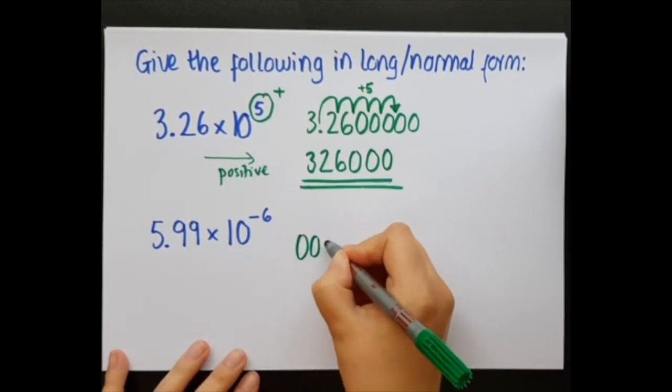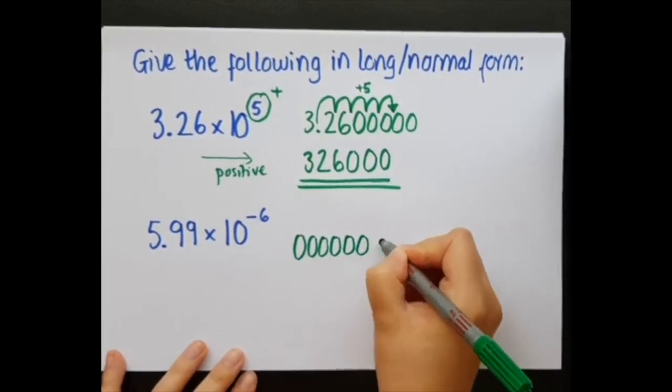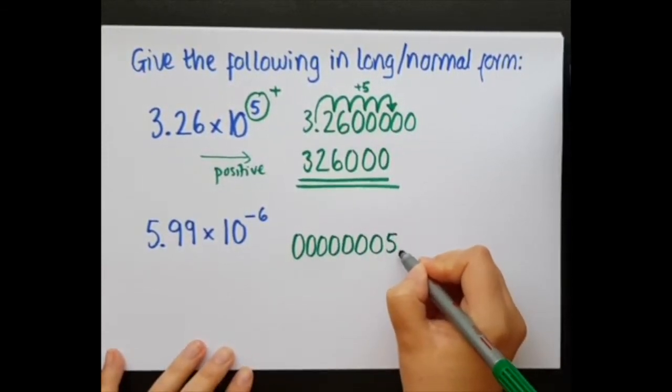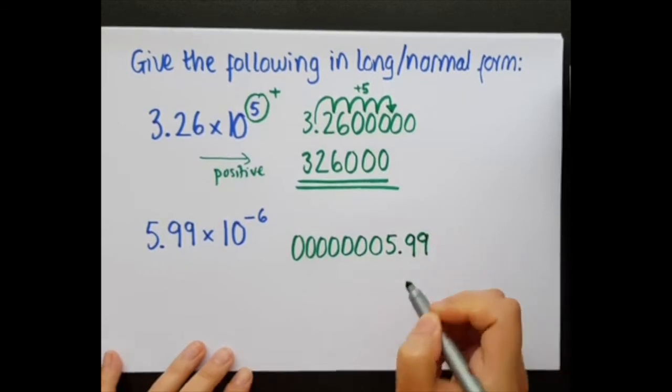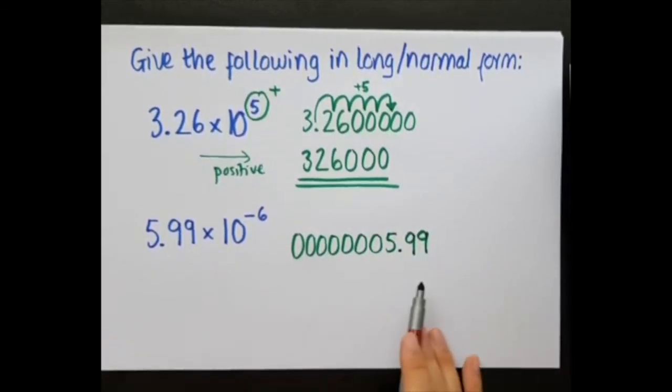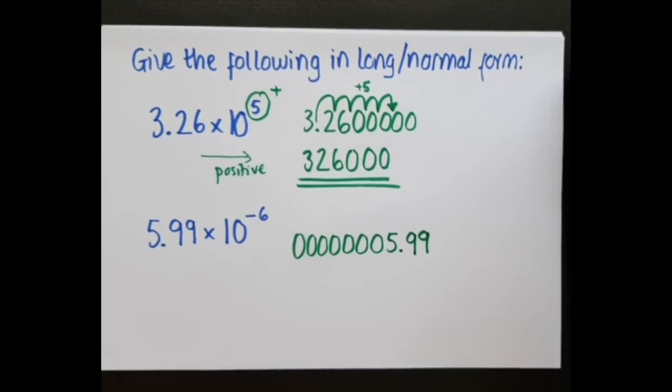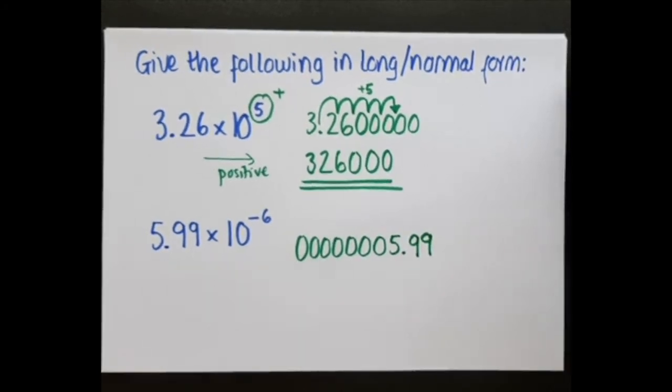So for this one, let me just add a bunch of zeros and then 5.99. So again, that's still 5.99. I haven't changed the number, I've just added some aesthetic zeros, but they're useful for when we're thinking about moving that decimal point.